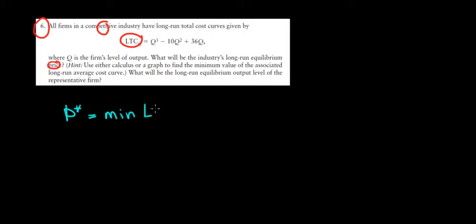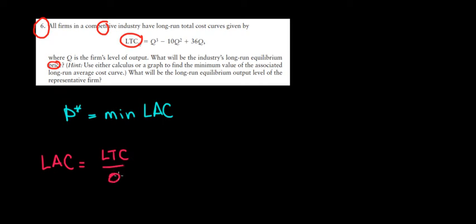Our first step is to find the long-run average cost. The long-run average cost is the long-run total cost spread over all units of output — that is, divided by quantity. We have the long-run total cost given by our function.